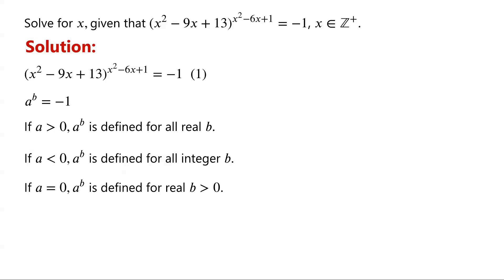As a to the power of b is less than 0, a cannot be greater than or equal to 0. That is, a must be less than 0. As a to the power of b equals negative 1, a must be negative 1, and b must be odd.